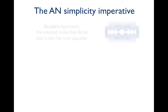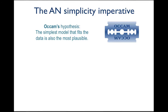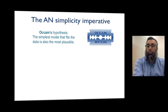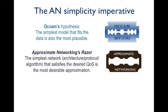As society becomes more complex, we need simpler solutions because simpler solutions are more robust and can withstand an uncertain future. We know of Occam's razor, which holds that the simplest model is often the most plausible. In a similar vein, we propose the approximate networking razor: the simplest network — whether architecture, protocol, or algorithm — that satisfies the desired quality of service is the most desirable approximation.